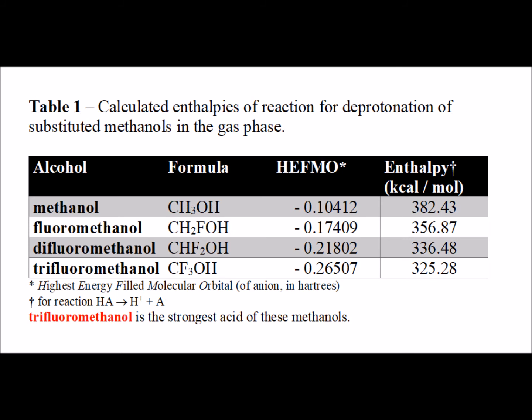Using electronic structure calculations, we can compute the enthalpy of reaction for the loss of a proton by each of these methanols. The larger the enthalpy, the weaker the acid. The smaller the enthalpy of reaction, the stronger the acid. We notice the general trend: as we add more fluorine atoms — more of the very electronegative element — the acidity increases, and it increases by a substantial amount, particularly as we add more and more fluorine atoms. So methanol is the weakest of these acids, and trifluoromethanol is the strongest.